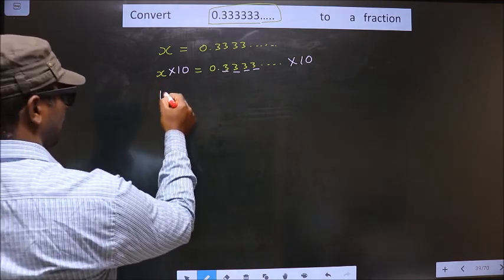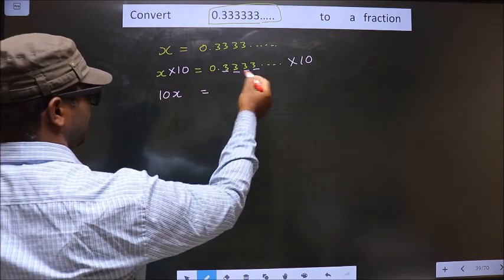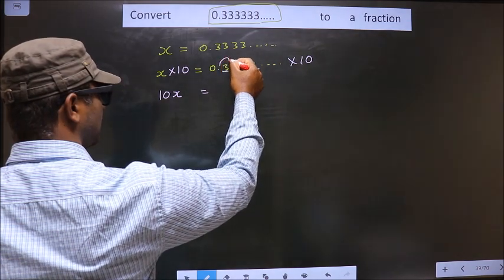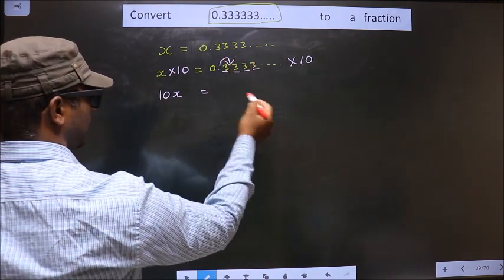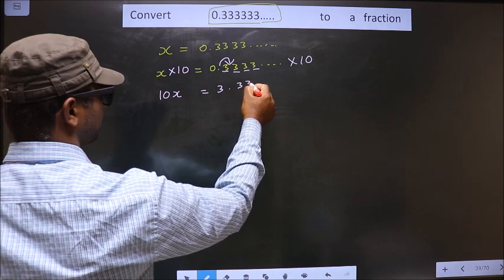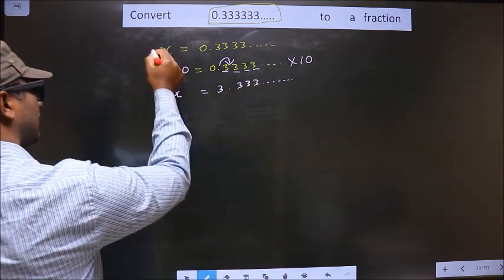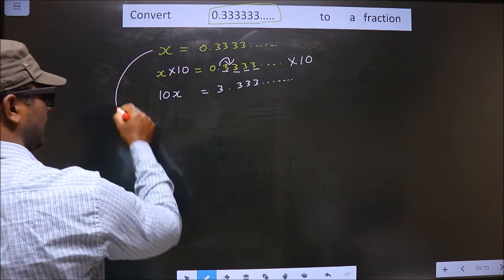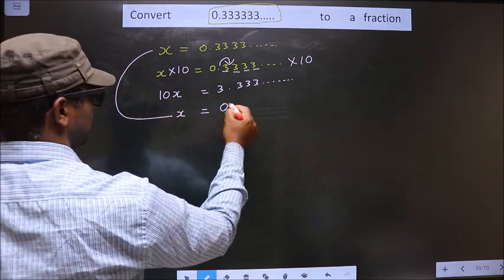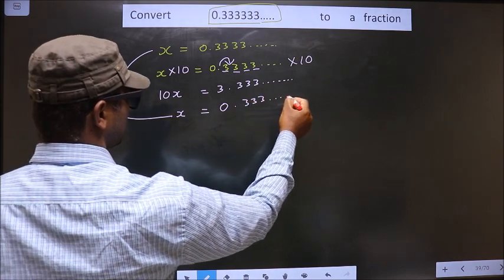So here I get 10x equal to — when I multiply this with 10, the decimal will shift one place to the right, making it 3.333 so on. Now I write x here, that is x equal to 0.333 so on.